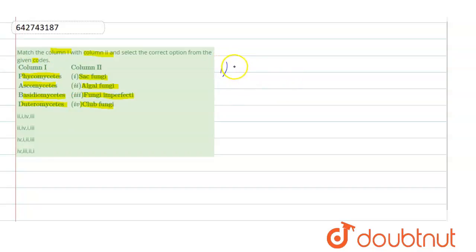The first one says phycomycetes. Now what is phycomycetes called? When we talk about phycomycetes, these are called algal fungi. Why is this group of fungi called algal fungi? Because of their aquatic habitat and form of thallus. This was all about phycomycetes, which is called algal fungi.